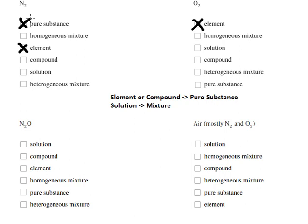For this one, we have two chemicals - nitrogen and oxygen - so that is a compound. Because this is a compound, we select pure substance.